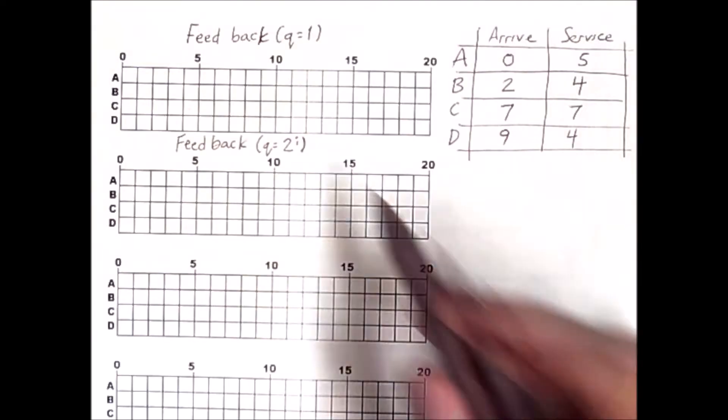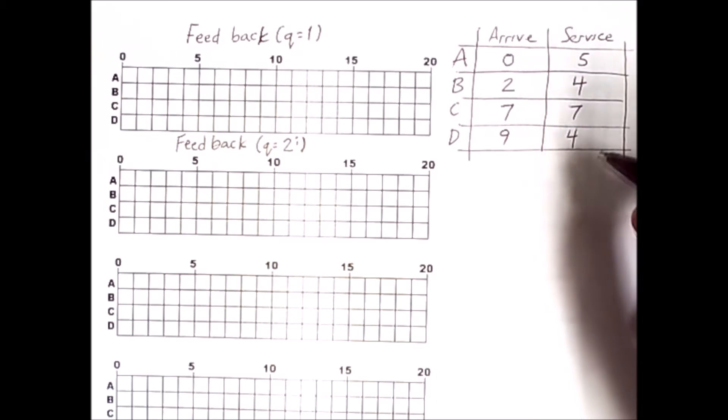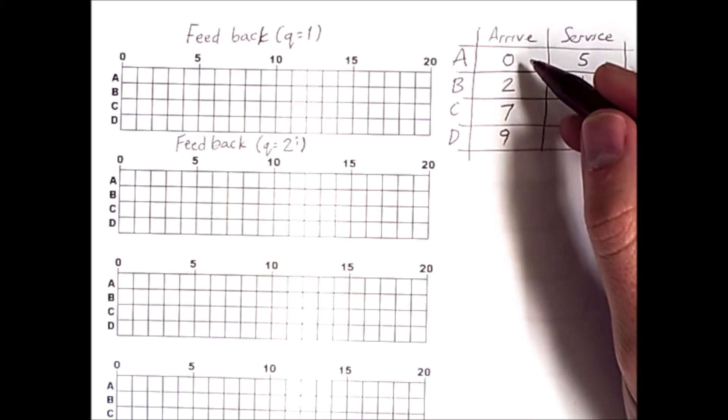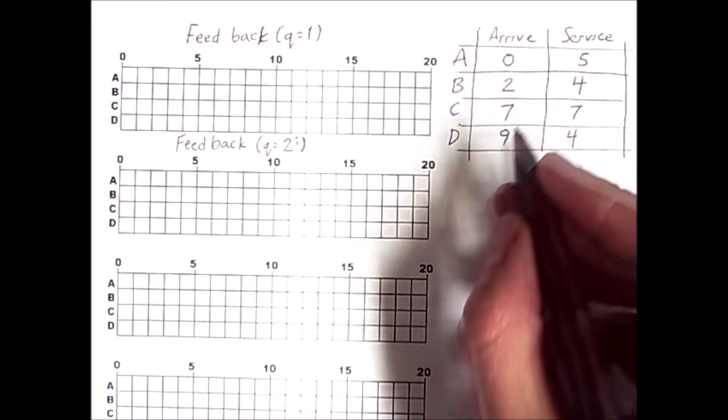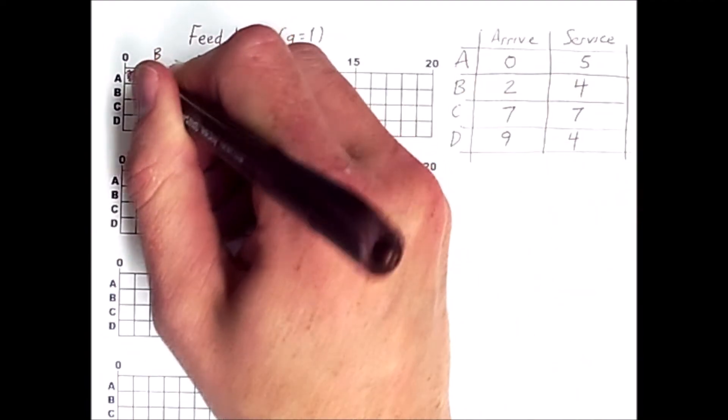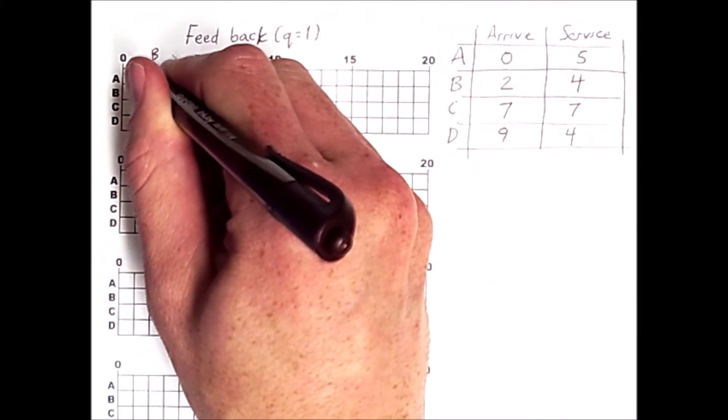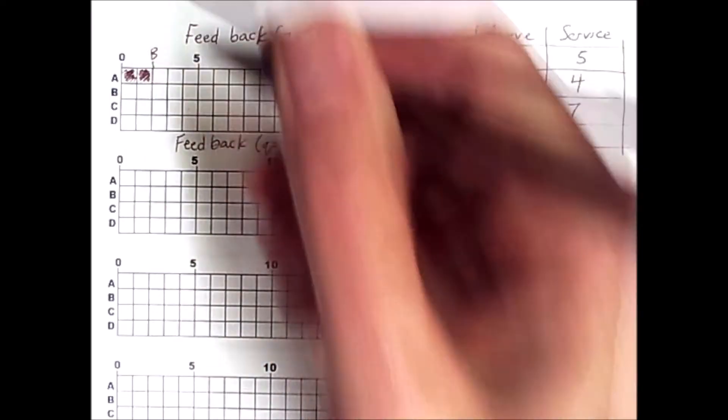I'll be demonstrating the two forms of feedback with this particular process arrival and service time sequence. So A arrives at time 0 and has a service time of 5. Now notice that the next process, B, arrives at time 2. So A gets to run, and the quantum is 1. So A would normally be kicked off the processor, but recall that our convention is that if there are no other processes that can run, then the currently running process just stays there, doesn't actually leave the processor.